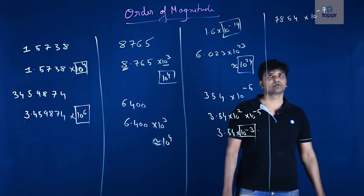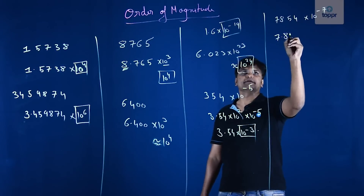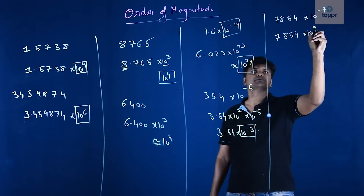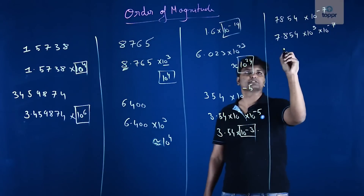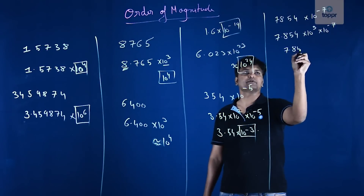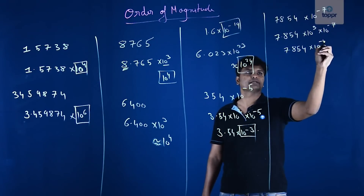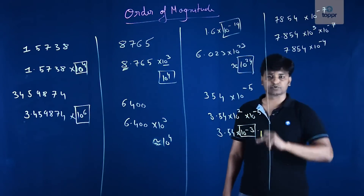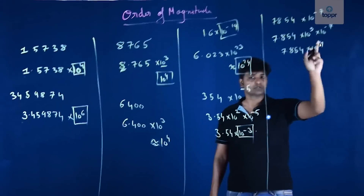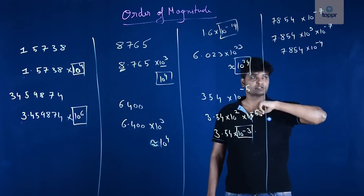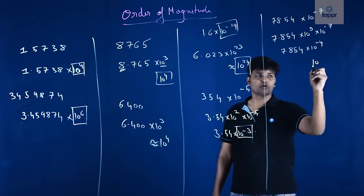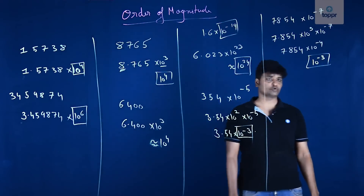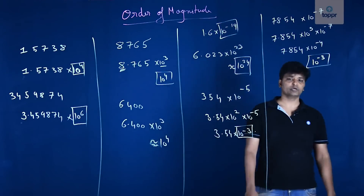Let us calculate 7.854 × 10^3 × 10^-7. This comes to 7.854 × 10^-4. The leading digit is 7, which is greater than 5, so we add one more to the power. Therefore, the order of magnitude is 10^-3.